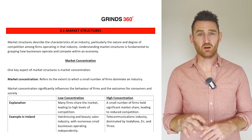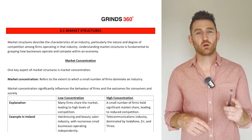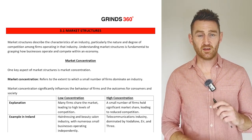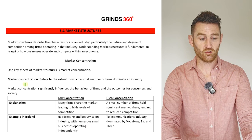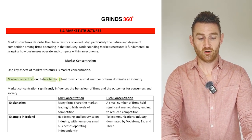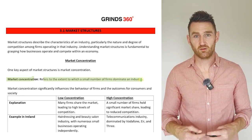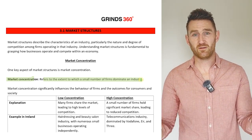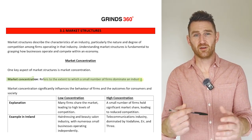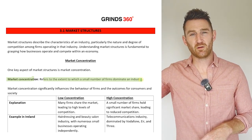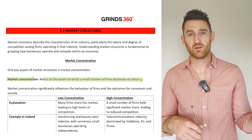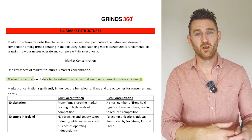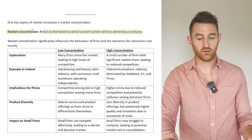In this video we'll look at the idea of market concentration, starting with the definition, then how to measure it using two methods — the second being more important and coming up more on recent exams. Market concentration refers to the extent to which a small number of firms dominate an industry. For example, the mobile phone industry in Ireland has just a few providers like Eir, Vodafone, and Three, whereas hairdressers and beauty salons — there are thousands around the country, so that industry is lowly concentrated.